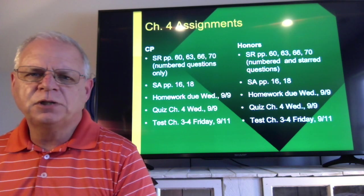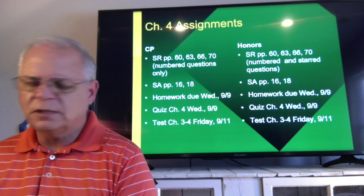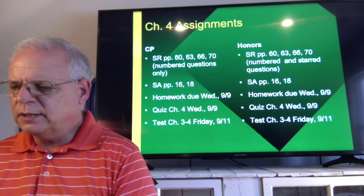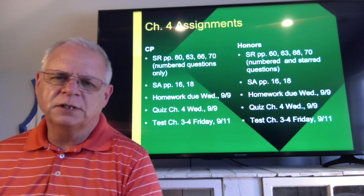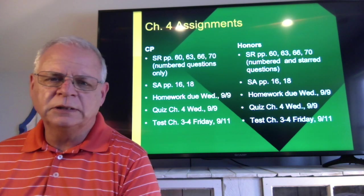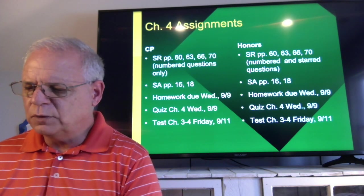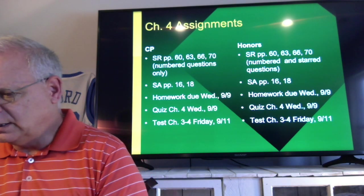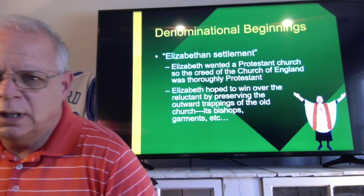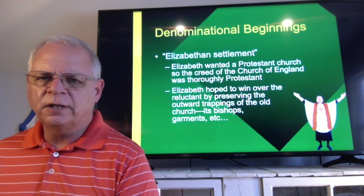The assignments for this chapter: section review pages are 60, 63, 66, and 70. Honors students, remember to do the start questions. The student activity pages are 16 and 18. All of this is due by Wednesday, September 9, where we will quiz and hopefully have a day of review, so that the test on chapters 3 and 4 will be on Friday the 11th. Those dates could change, so pay attention to Google Classroom. The assignments are listed there as well.